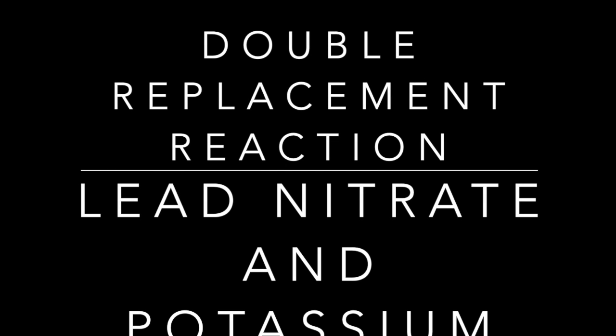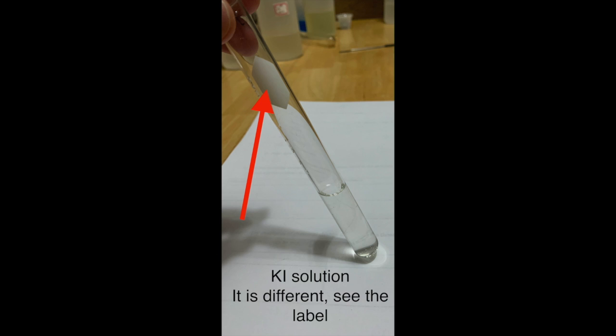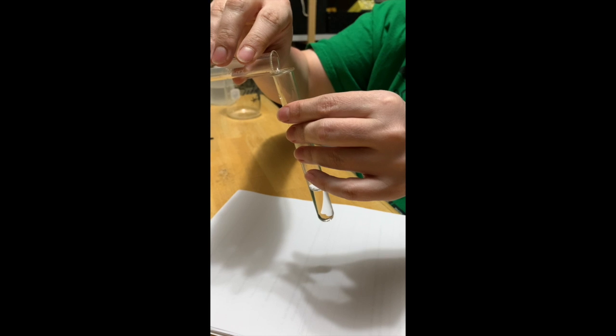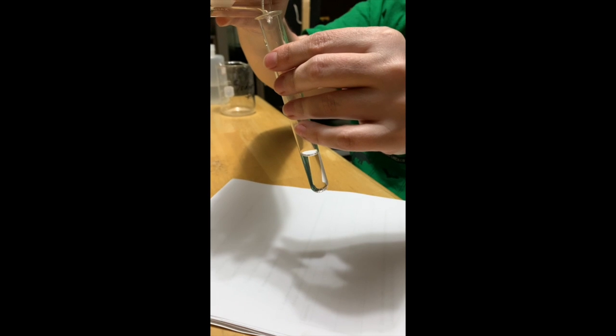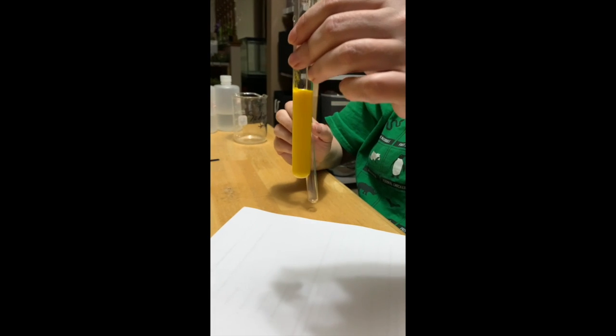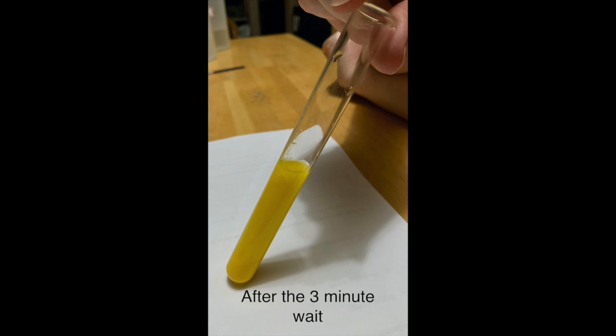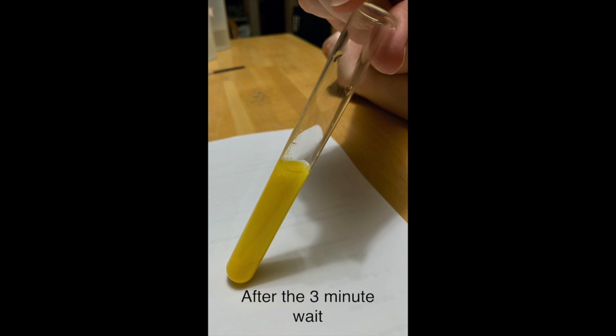Up next are the double replacement reactions. First we're going to look at lead nitrate and potassium iodide. So here are the solutions in their test tubes, potassium nitrate and then lead iodide. You can see it is different. That one's labeled. So here I'm going to add them together, take the two solutions, add one to the other. And you can see what occurs. And then through the magic of a movie, you get to fast forward three minutes. So there's what happens after three minutes. And there's the zoomed in picture after the three minutes.